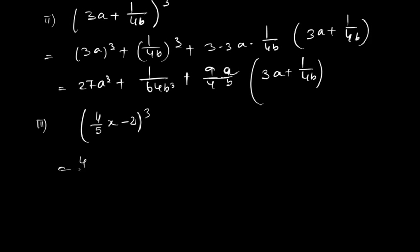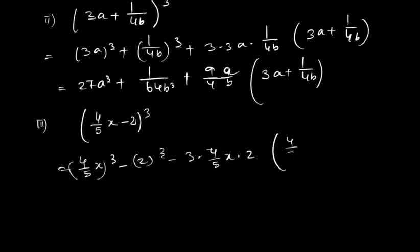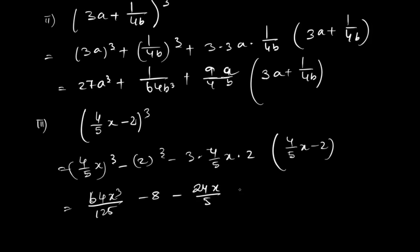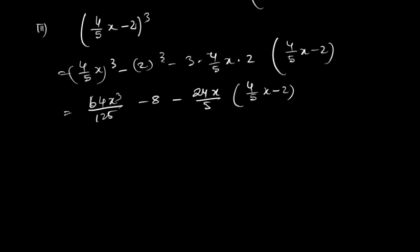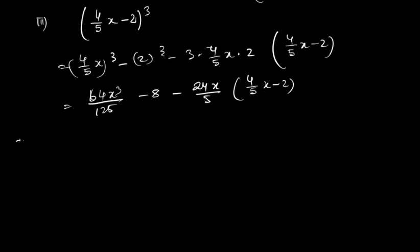The next question is (4/5·x − 2)³. Applying the (a − b)³ formula: (4/5·x)³ − 2³ − 3·(4/5·x)·2·(4/5·x − 2), which gives 64x³/125 − 8 − 24x/5·(4/5·x − 2).